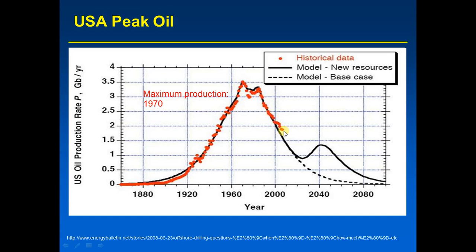By the early 2000s, U.S. oil production had dipped below 2 gigabarrels per year. By 2010, it was down to about half of what it was in 1970. But we'll talk about how in recent years, U.S. oil production is rising again.